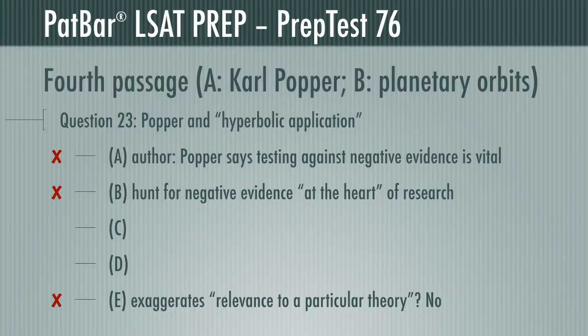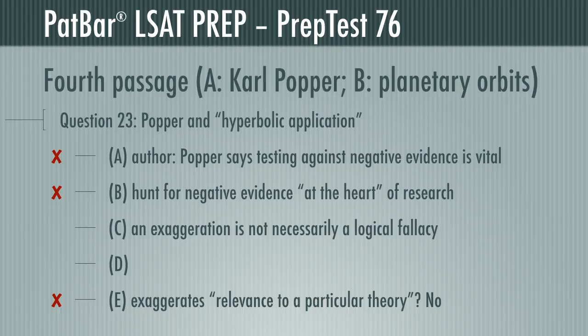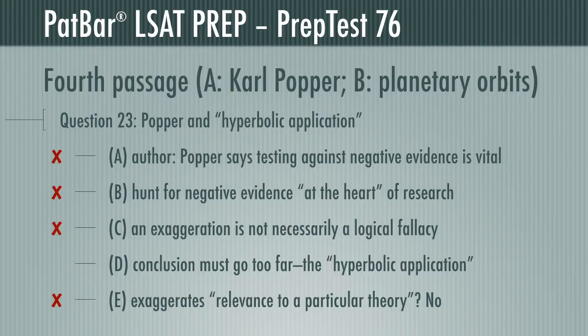Since the phrase 'hyperbolic application' means to exaggerate, E is tempting but incorrect. Though the author writes that Popper's use of logical asymmetry is inadequate with respect to real-world situations faced by scientists, there's nothing about its relevance to any particular theory. If you chose C, you're not alone, but you're not correct either. The author does suggest that Popper committed a fallacy, but the fallacy has to do with whether negative evidence is conclusive, not whether the logical asymmetry between positive and negative evidence is exaggerated — so C must be incorrect. The author writes in paragraph 1 that Popper found negative evidence of a theory to be tantamount to disproof thereof, then in paragraph 2 outlines why that conclusion must go too far — or, in other words, too radical. That's the hyperbolic application, and D is the correct response.